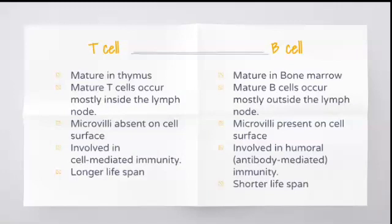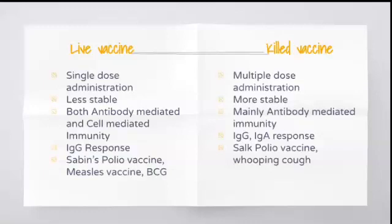The next question is: differentiate between live vaccine and killed vaccine. Live vaccine is a single dose administration whereas killed vaccine is a multiple dose administration. Live vaccine is less stable compared to killed vaccine, so killed vaccines are always more stable. Live vaccines create both antibody and cell-mediated immunity whereas killed vaccine gives only antibody-mediated immunity.